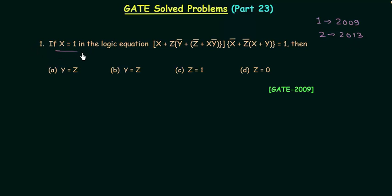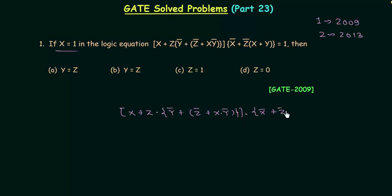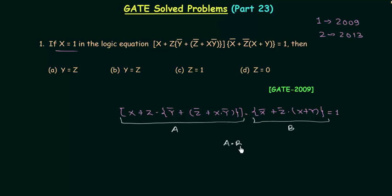If x is equal to 1 in the logic equation, choose the correct option. The given logic equation is: (x OR z) AND (y complement OR z complement) OR (x AND y complement) AND (x complement OR z complement) AND (x OR y), and this equals 1. Let's call the first part of the logic equation A and the second part B. So we have A AND B equal to 1, which implies A is equal to 1 and B is equal to 1, because A AND B is 1 only when both A and B are 1.